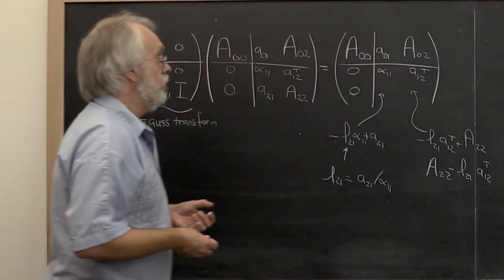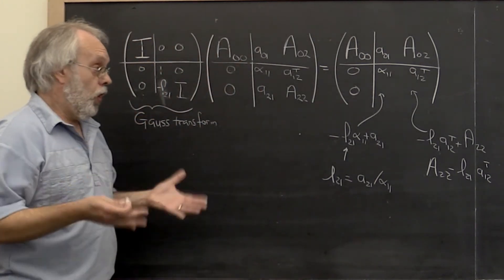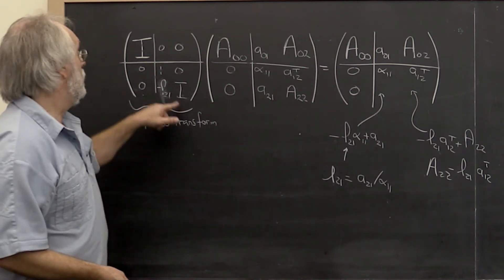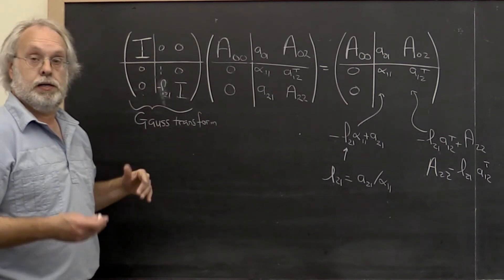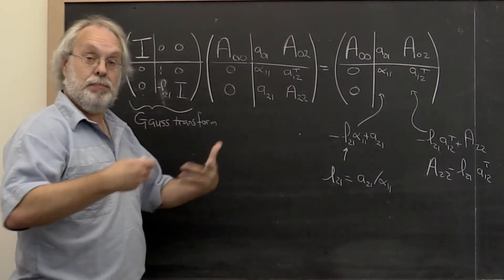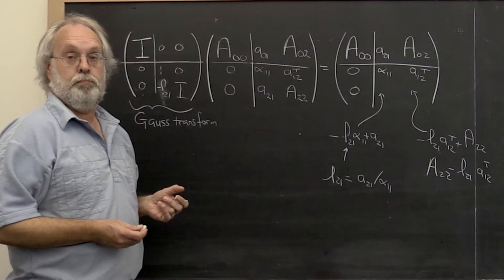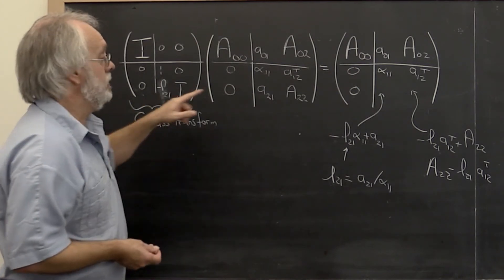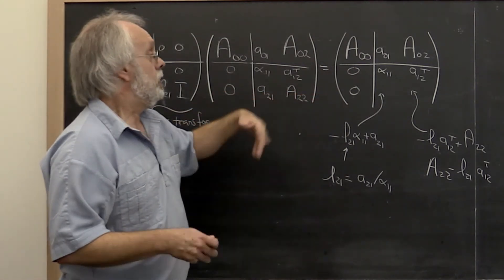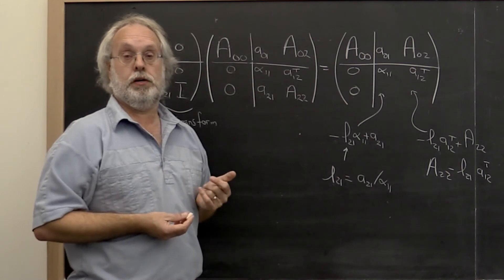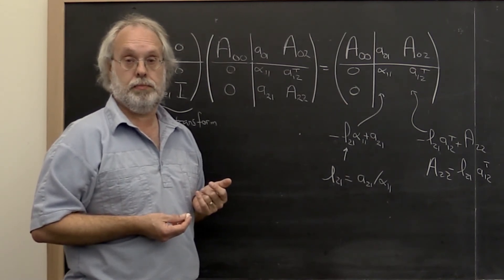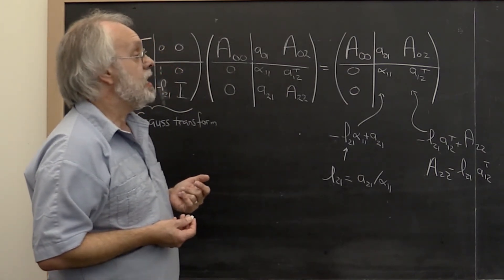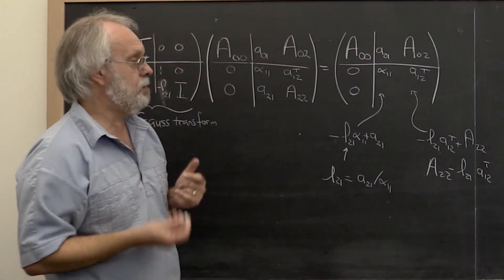So the point is computing and applying this particular Gauss transform has the same net effect as doing one step of our LU factorization algorithm. Now what does that mean?